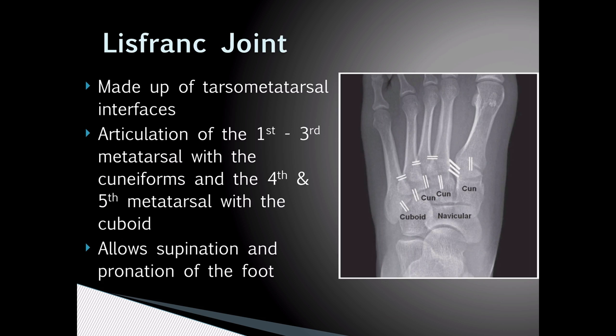Since the Lisfranc joint is of significant importance in regards to injury, it deserves a little more investigation. Anatomically, the Lisfranc joint is made up of the tarsal-metatarsal interfaces. When referring to the foot, the cuboid, cuneiform, navicular, talar, and calcaneal bones are often referred to as the tarsal bones. You can almost think of the tarsal bones as the carpal bones of the foot, with the metatarsals and phalanges being analogous to the metacarpals and phalanges of the hand. The Lisfranc joint is made up of the articulation of the first through third metatarsal with the medial, middle, and lateral cuneiforms, as well as the fourth and fifth metatarsal, which both articulate with the cuboid.